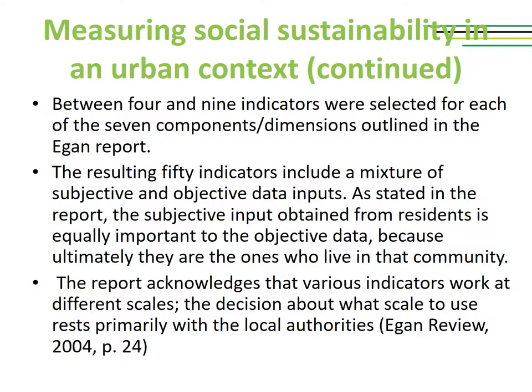For each of the seven dimensions, the Egon Report has between four and nine indicators. In the end, there were approximately 50 indicators, including a mixture of subjective and objective data inputs. In certain cases, objective data are more relevant than subjective ones, and the reverse is also true in other situations. As stated in the report, the subjective input obtained from residents is equally important to objective data because ultimately the citizens are the ones who live in that community. The report also acknowledges that various indicators work at different scales, with the decision about scale resting primarily with local authorities.